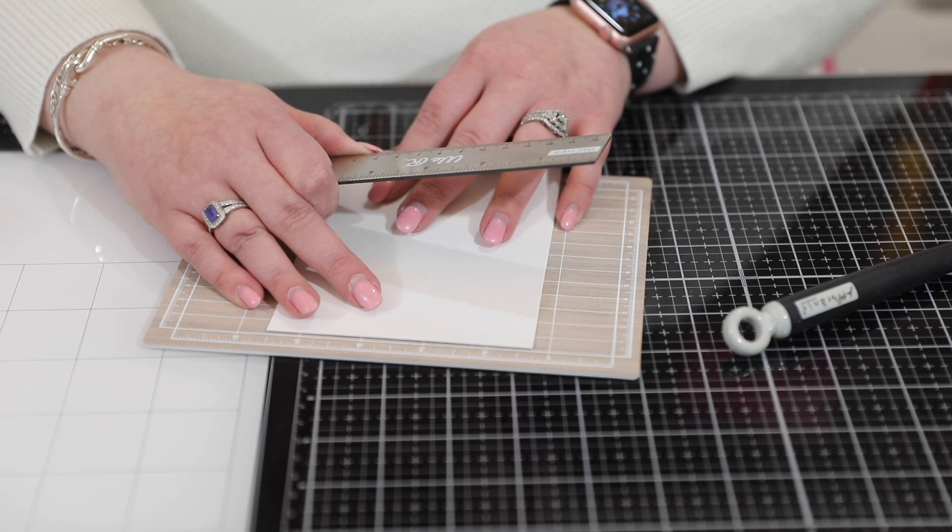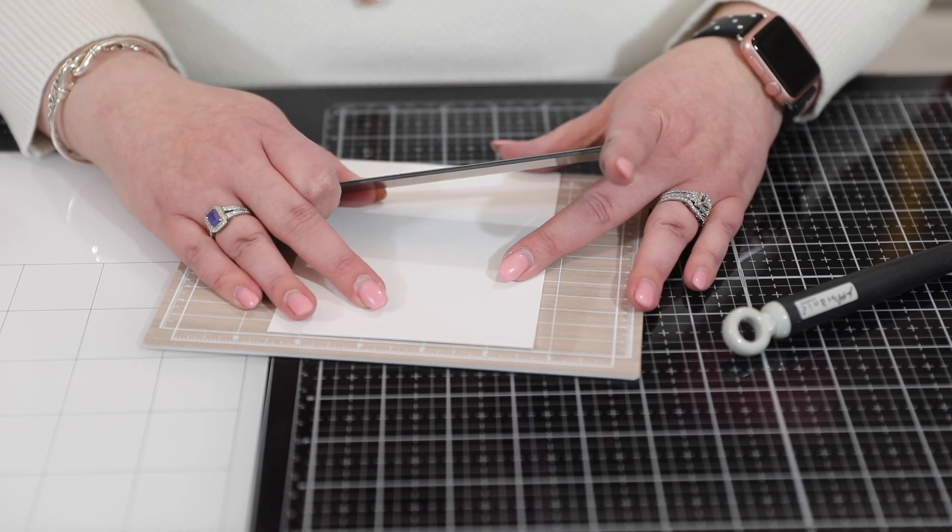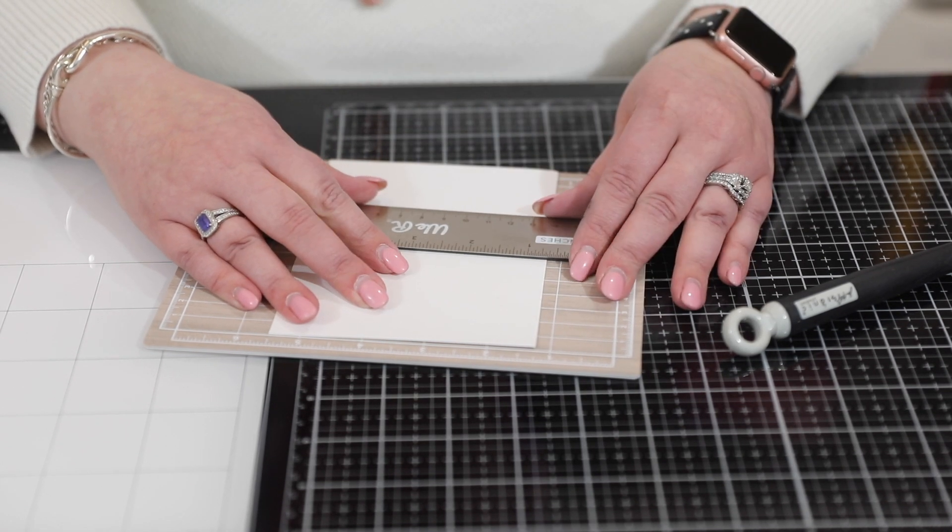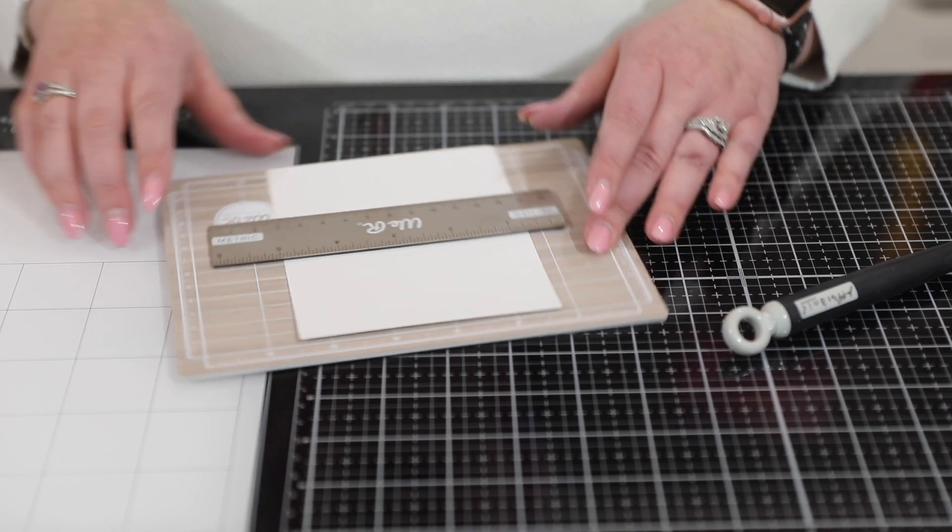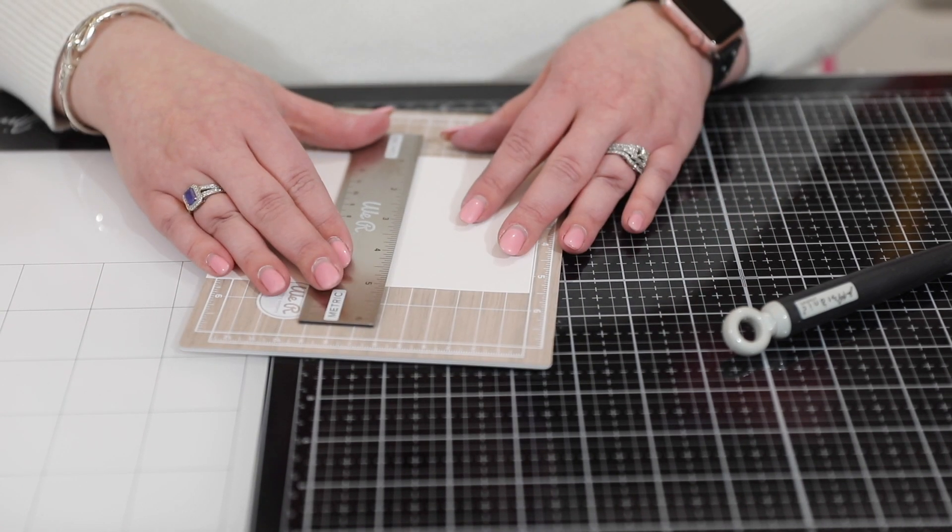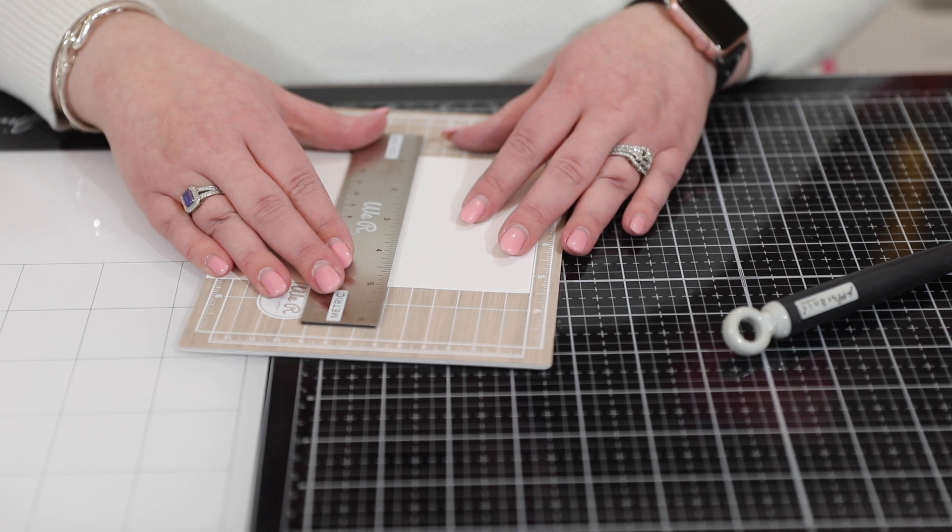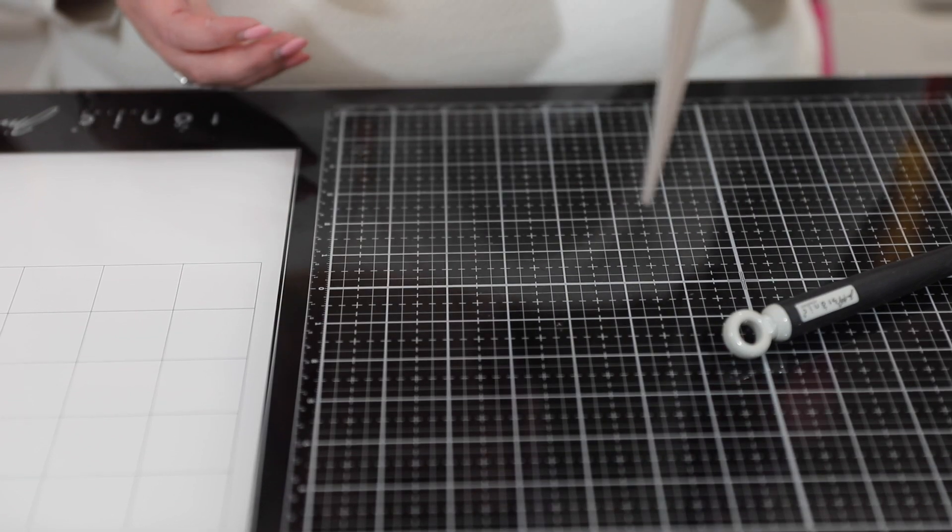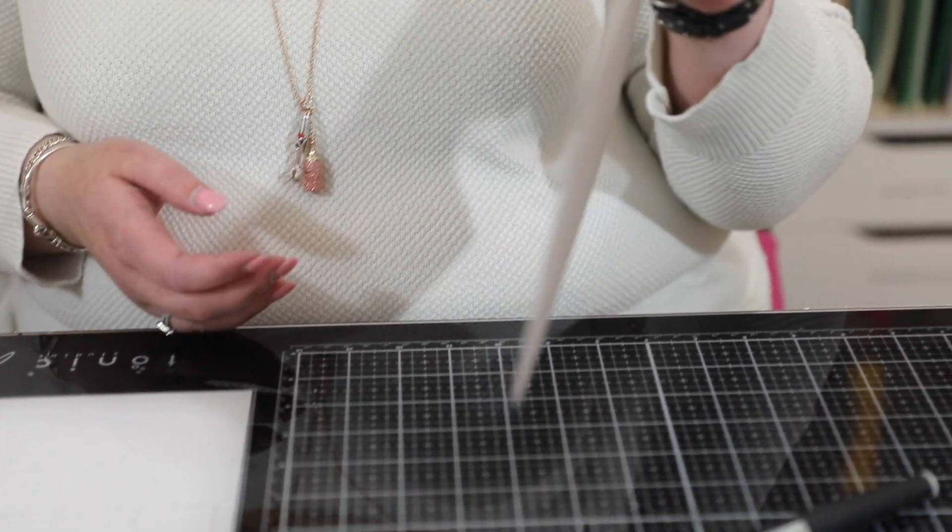My ruler stays in place. It's also nice and small—it's perfect for us card makers. I can line it up and now my ruler stays in place. You can see I can kind of do this and it's not going to move anywhere on me.